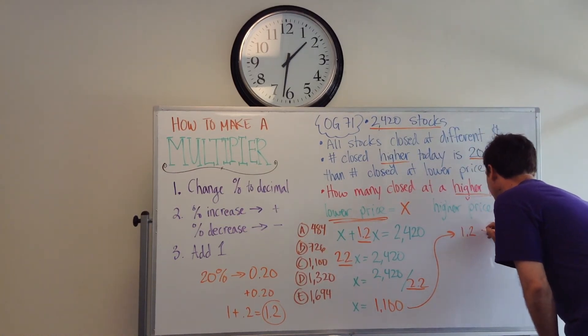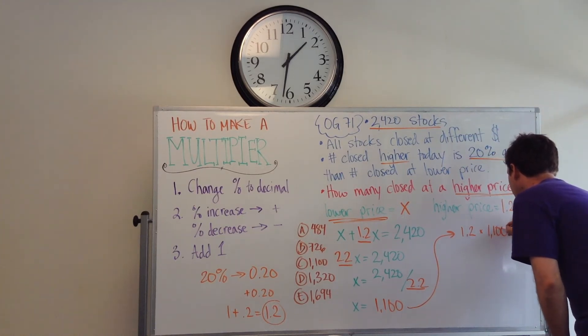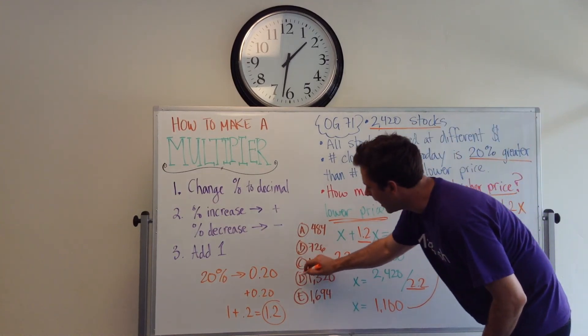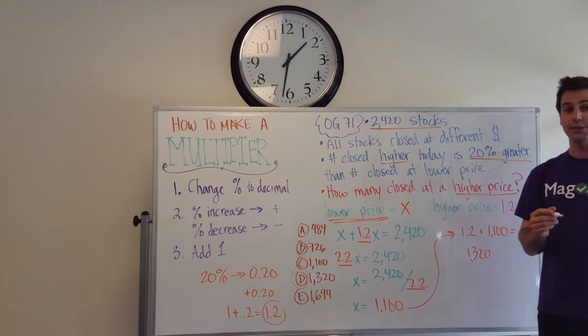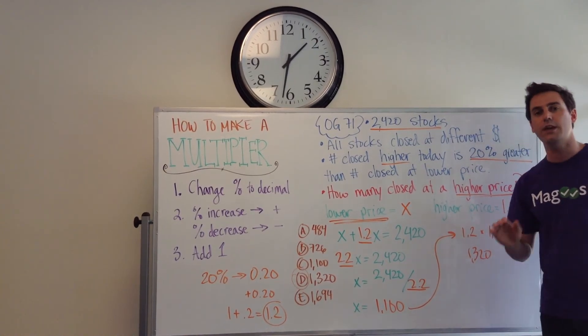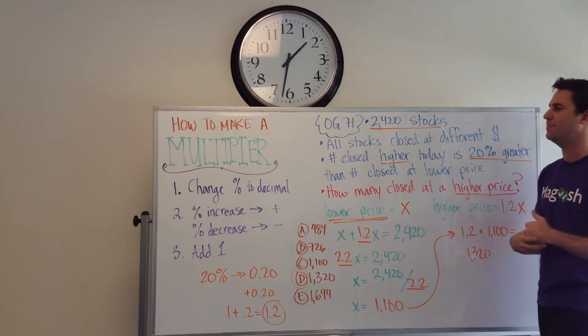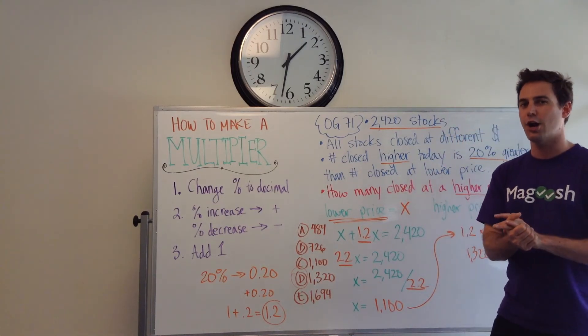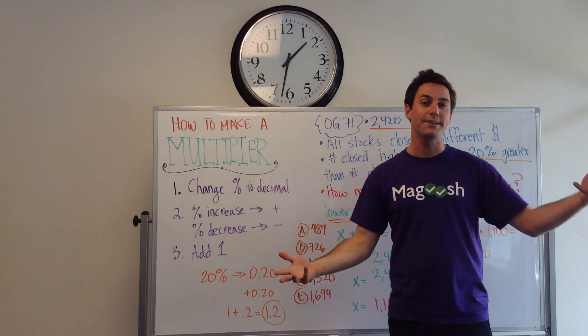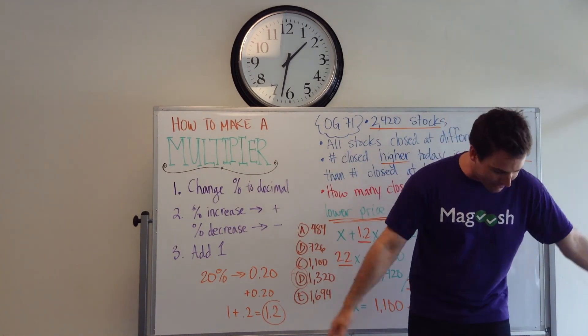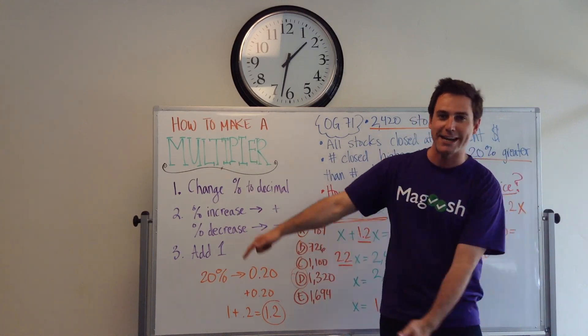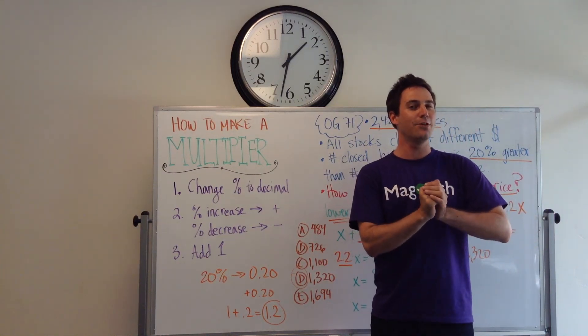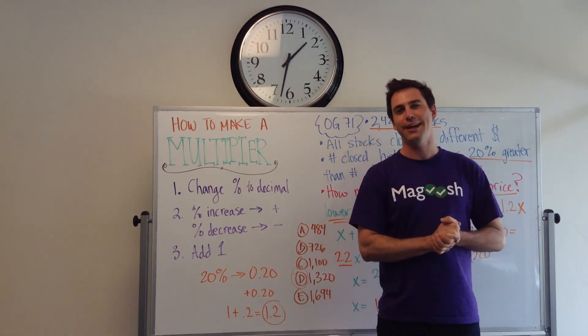So we got 1.2 times 1100 and that's going to equal 1320. So our answer here is actually going to be d. Alright, so multiplier is extremely useful when dealing with percent change. So percent increase and percent decrease. Remember the steps are very simple and easy. Do a little practice. It won't be that hard. And if you have any questions or comments, if you have a request for a type of video that you'd like to see, put them in the comments down below. And I'll be here next Tuesday with another video to help you out on the GMAT. I hope you guys have an excellent day. And I will see you next week.